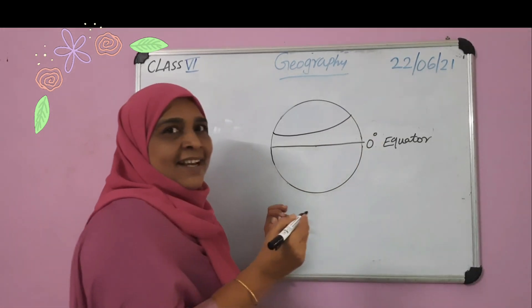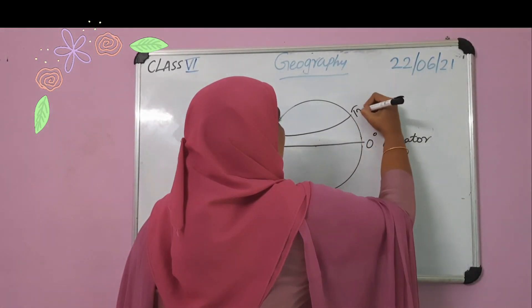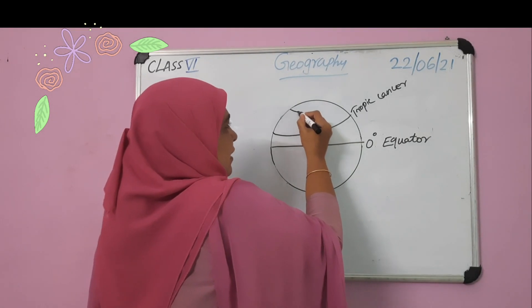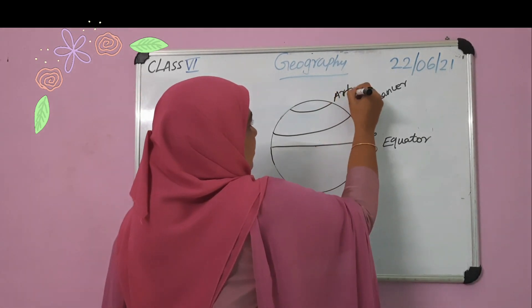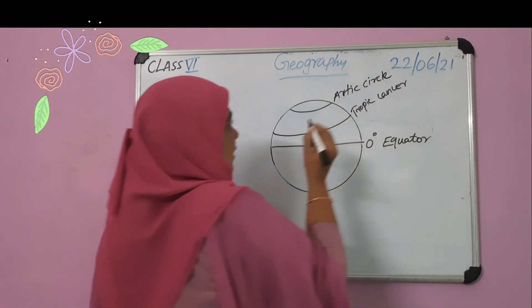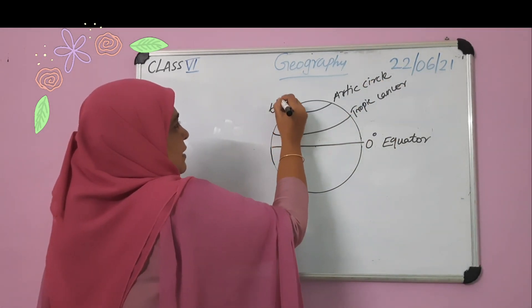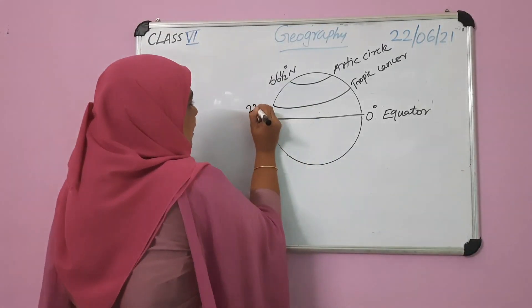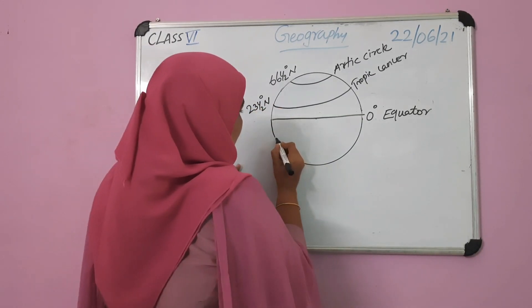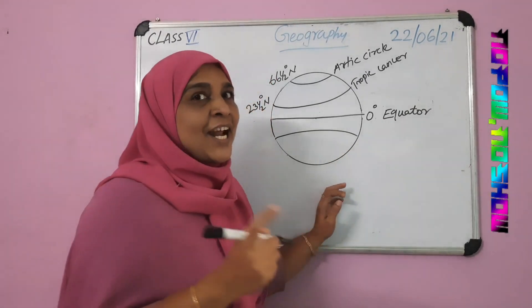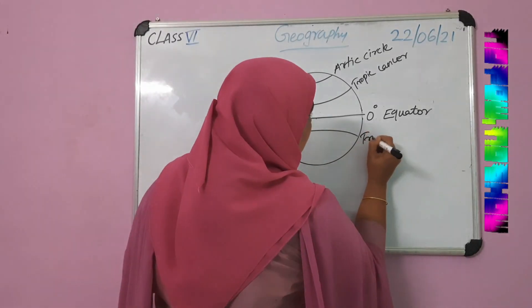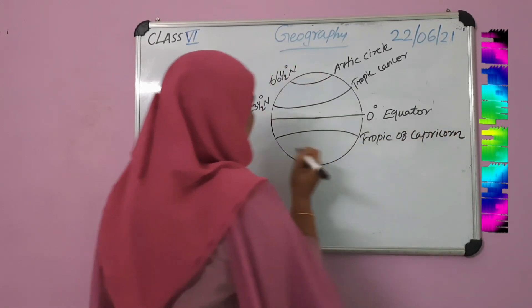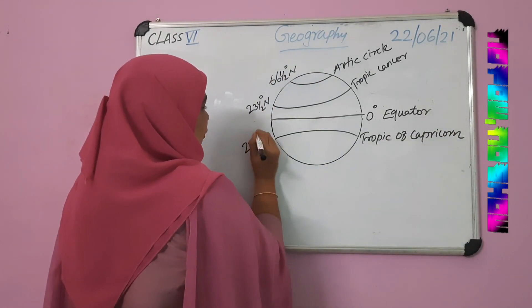This is Tropic of Cancer. And this one is Arctic Circle — 66 and a half degrees north. And Tropic of Cancer is 23 and a half degrees north. Then this is Tropic of Capricorn — 23 and a half degrees south. This is the southern hemisphere.